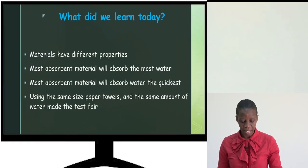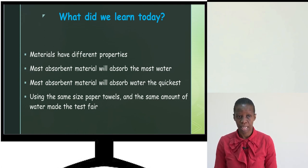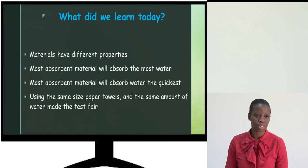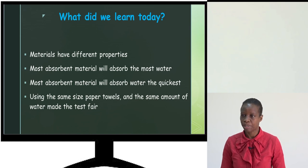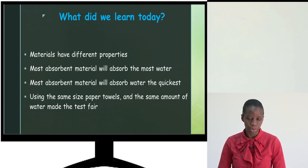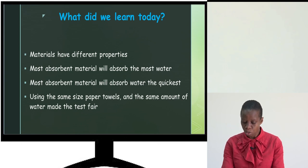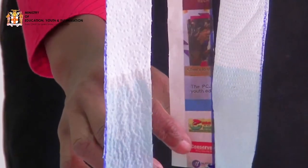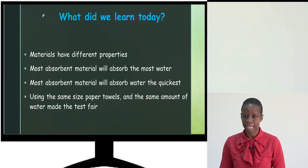So what did we learn today? We're reminded that materials have different properties. The material that is most absorbent will allow water or any liquid to move through the quickest and will absorb the most liquid. To make our investigation fair, we used the same size paper, the same amount of water in the same container, and the only thing we changed was the different types of paper. That is how we ensured a fair test. I hope you learned something today. That's all for this session of Investigating Science — see you next time!